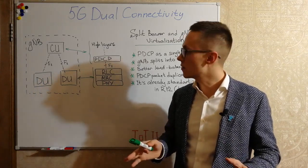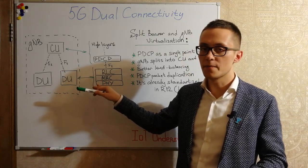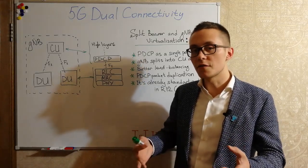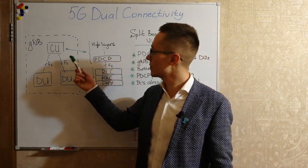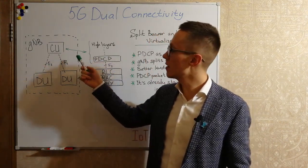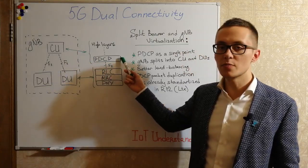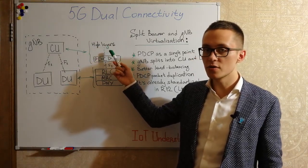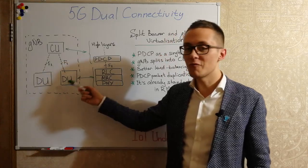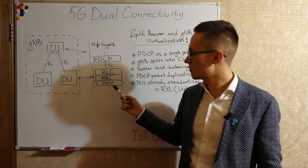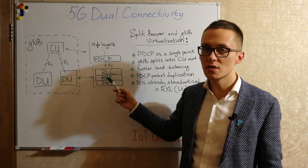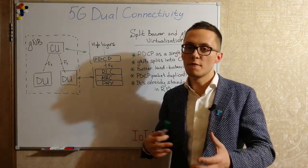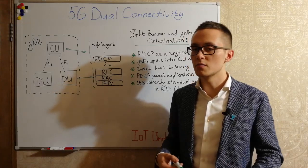Basically there are many possible options for how exactly we can split them. But in terms of radio interface protocols in 5G, we can have a situation where the central unit is responsible for PDCP processing and for high layers of the radio interface, and distributed units are responsible for low layer processing — for the physical layer, for MAC, for RLC — and again there are many possible options. It totally depends on how vendors and manufacturers implement it.